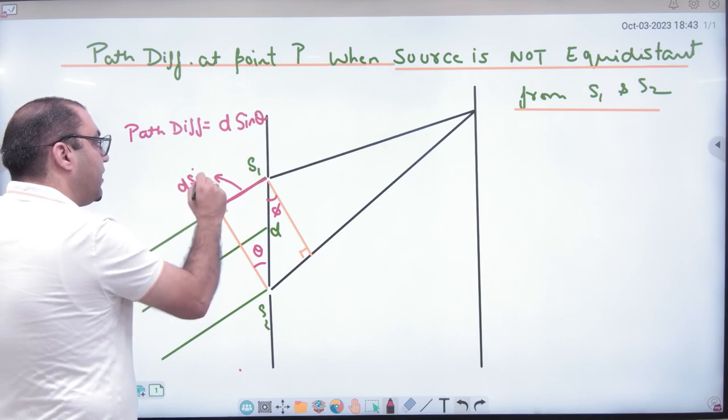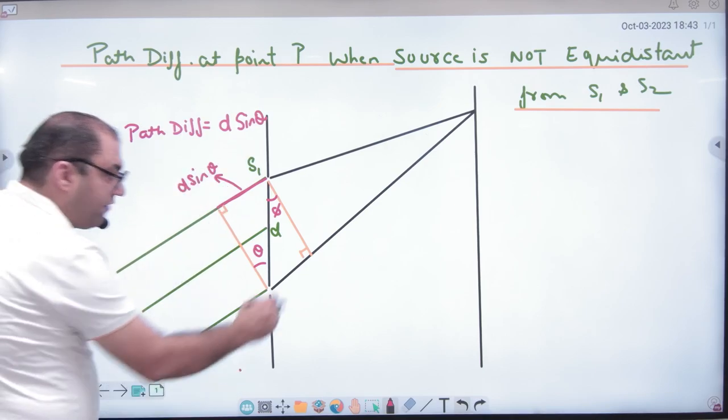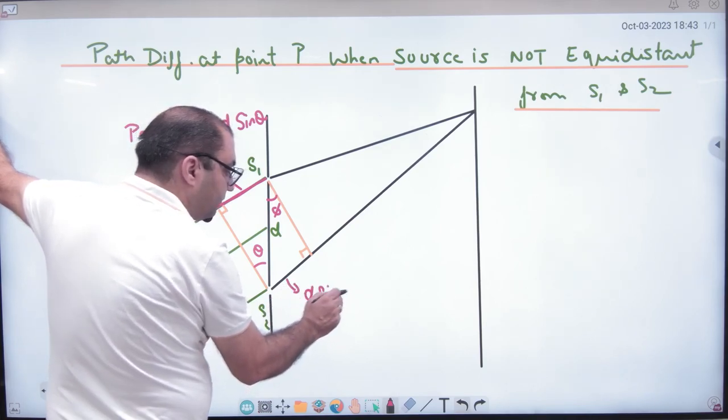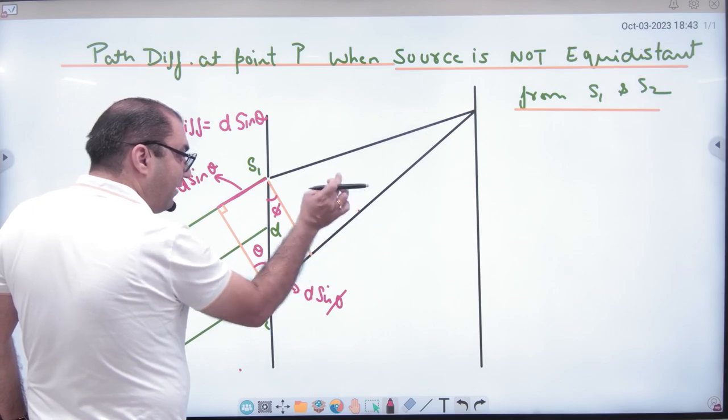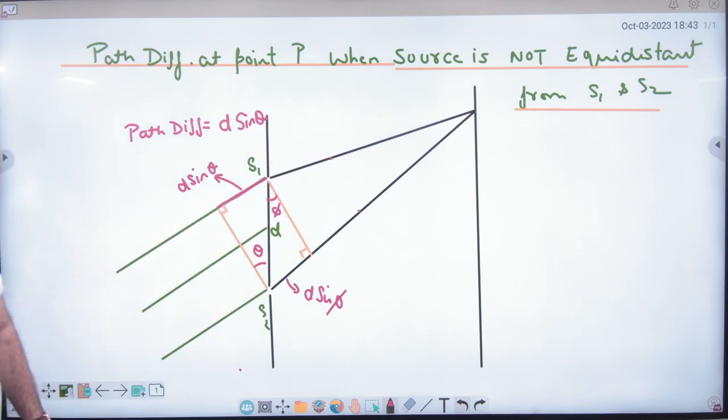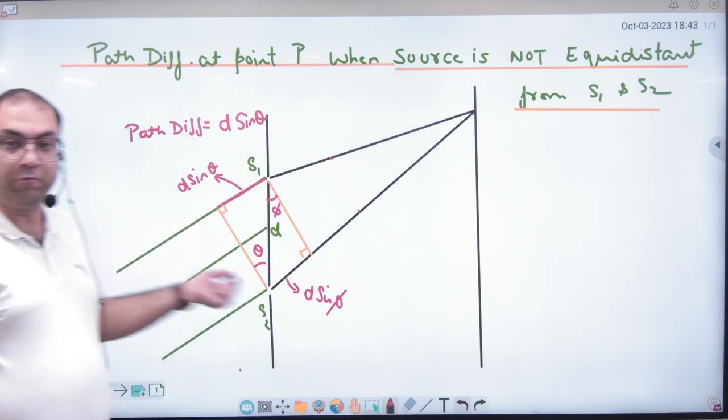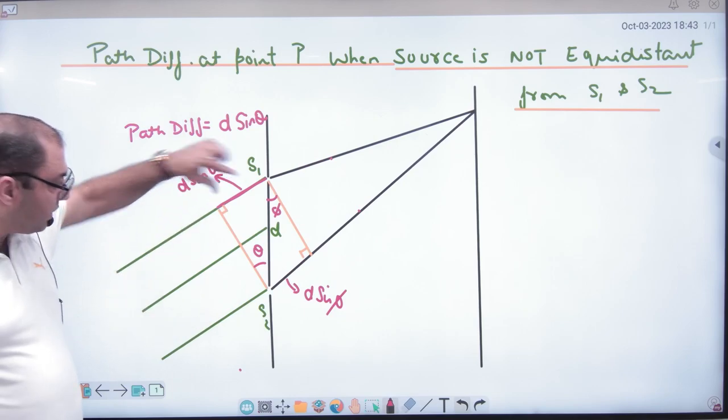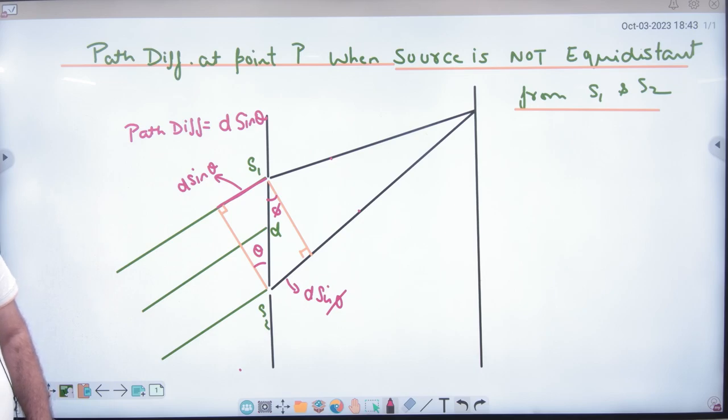Path difference. So tell us, how will the path difference be? D into sine of theta. What is the step clear? So what is the path difference? D sin theta, which way?